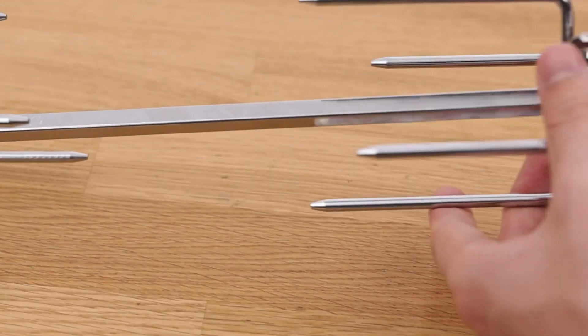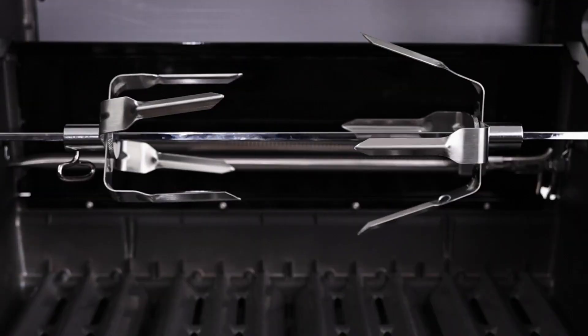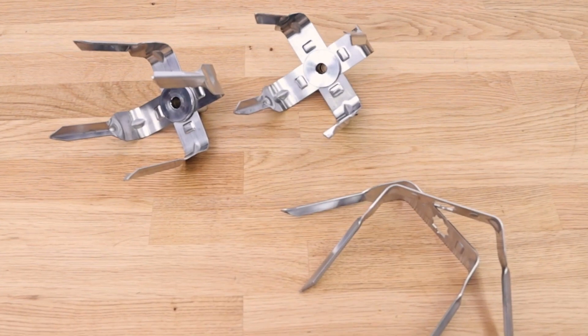An additional set of forks is beneficial if you're looking to cook multiple pieces of meat at once, or you can upgrade your rotisserie kit with the stainless steel megaforks.